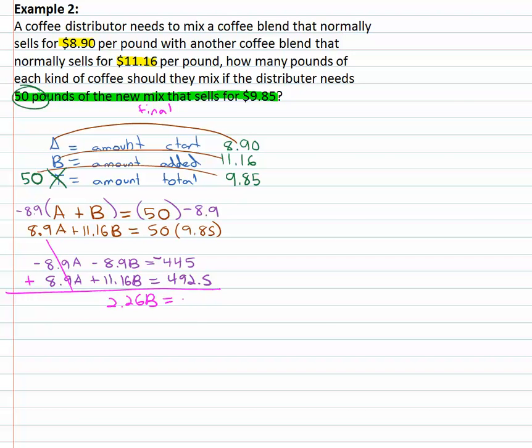And finally to finish solving, we just have to divide by the two twenty six and we have our B alone.